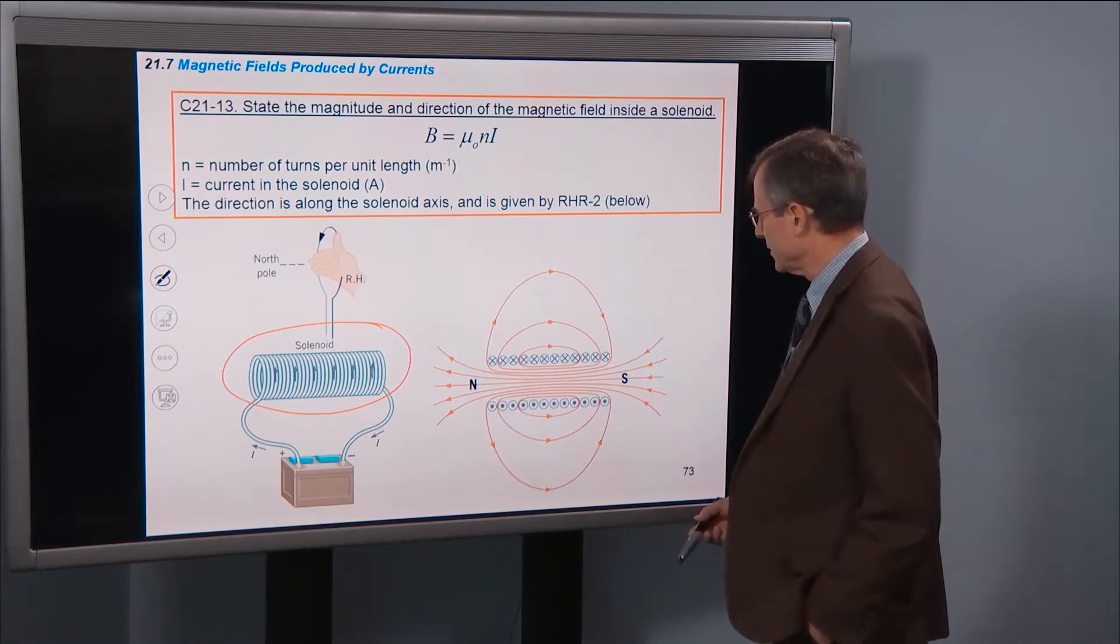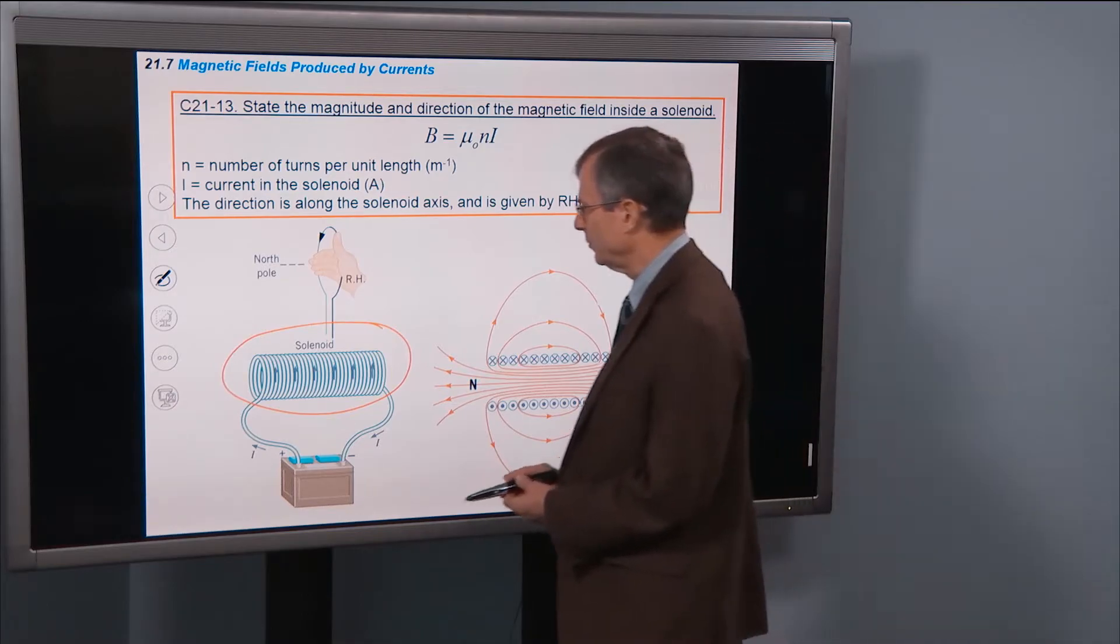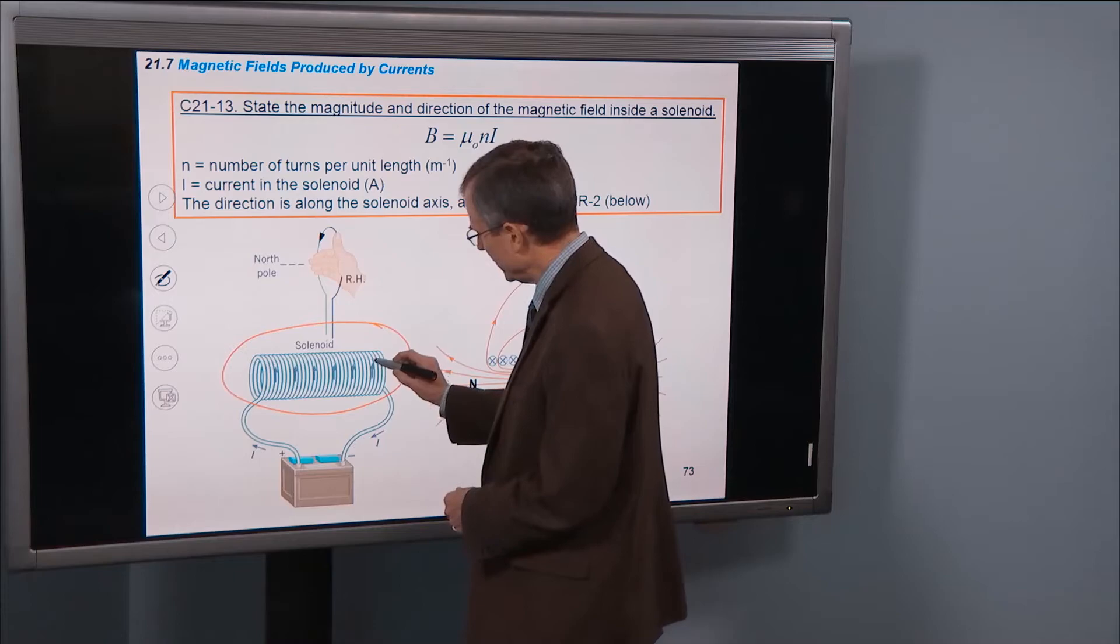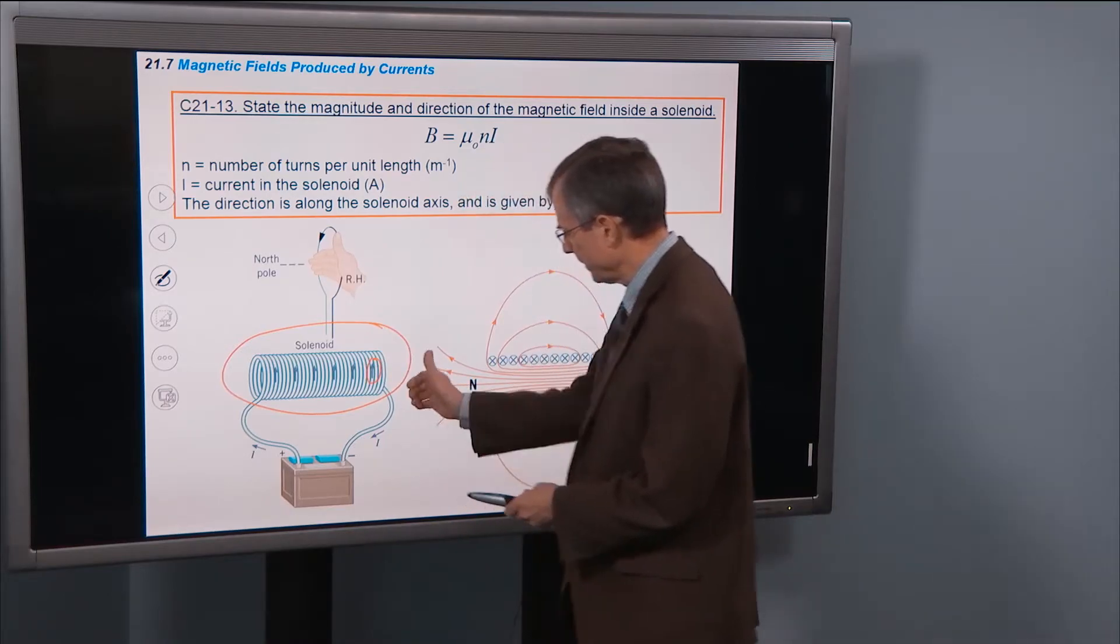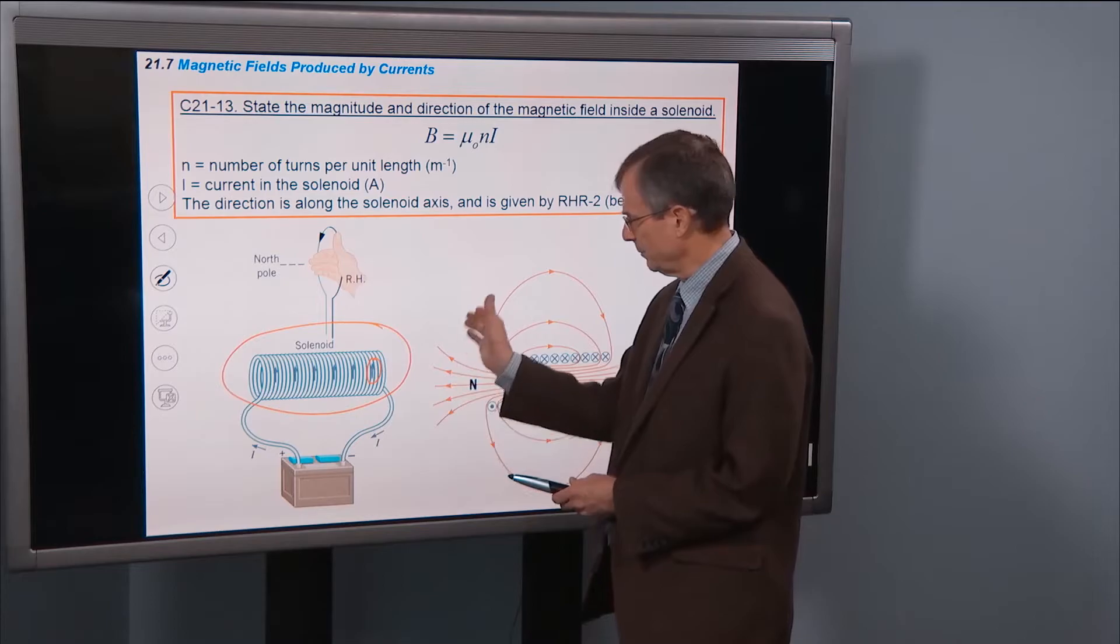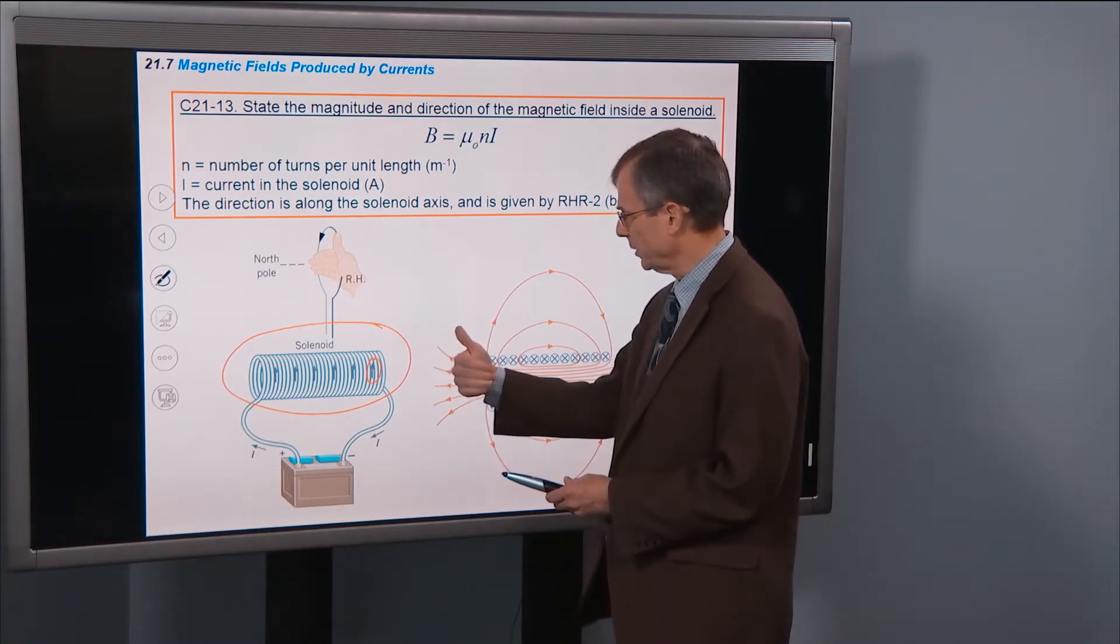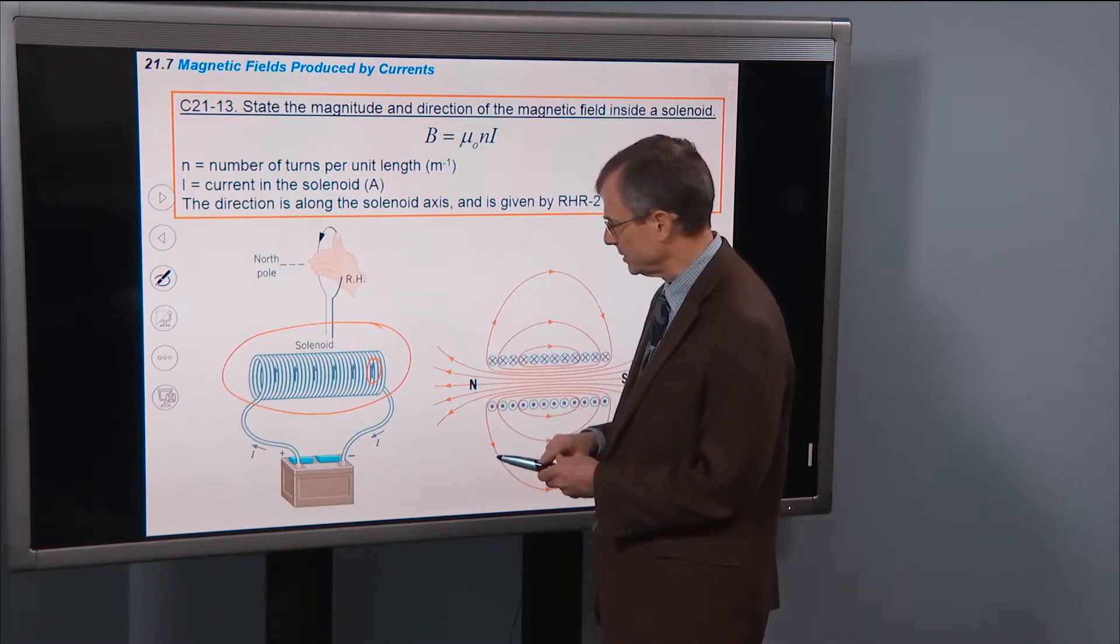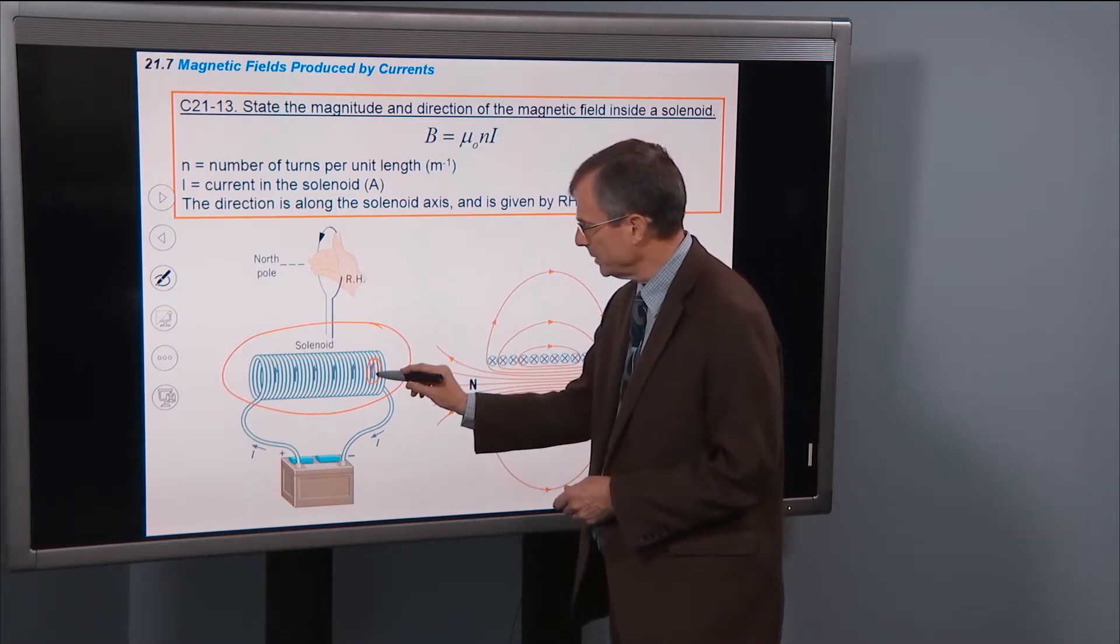You're going to be able to find the direction of the magnetic field using the right-hand rule number two. If you put your thumb in the direction of this little piece of current, right on the front side of the solenoid, put your thumb in that direction, and then curl your fingers around, that'll give the direction of the magnetic fields around this wire.